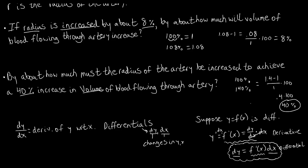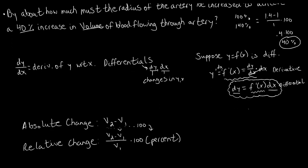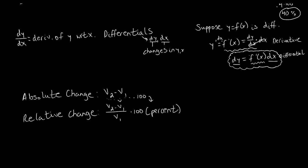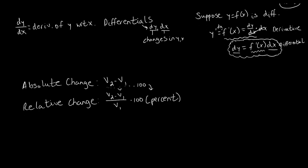Now let's get into the actual work for the problem. We need to find the differential form of our original function and incorporate the differentials we've been discussing. We need a change in y, the derivative of our original function, and a change in x. Let's find the derivative of our given function, which was volume equals k times r to the fourth.